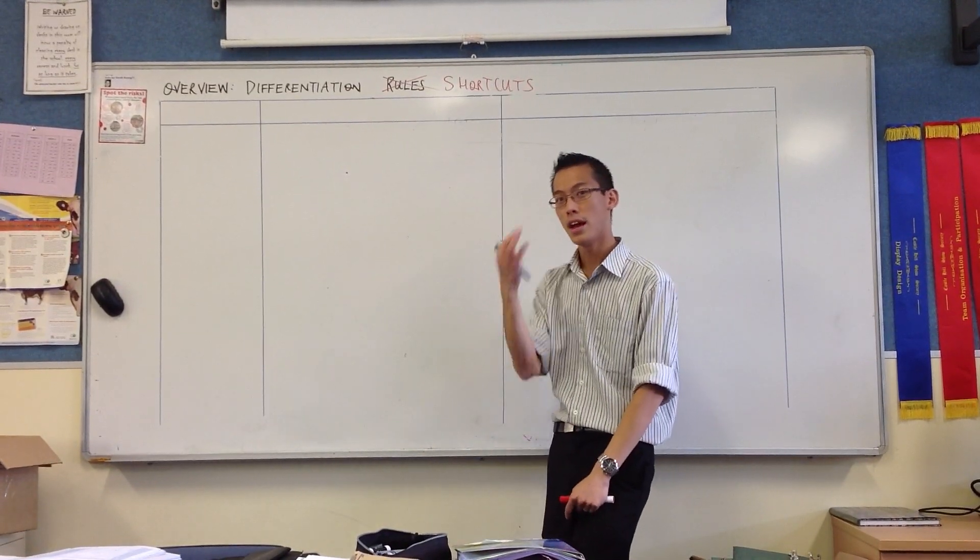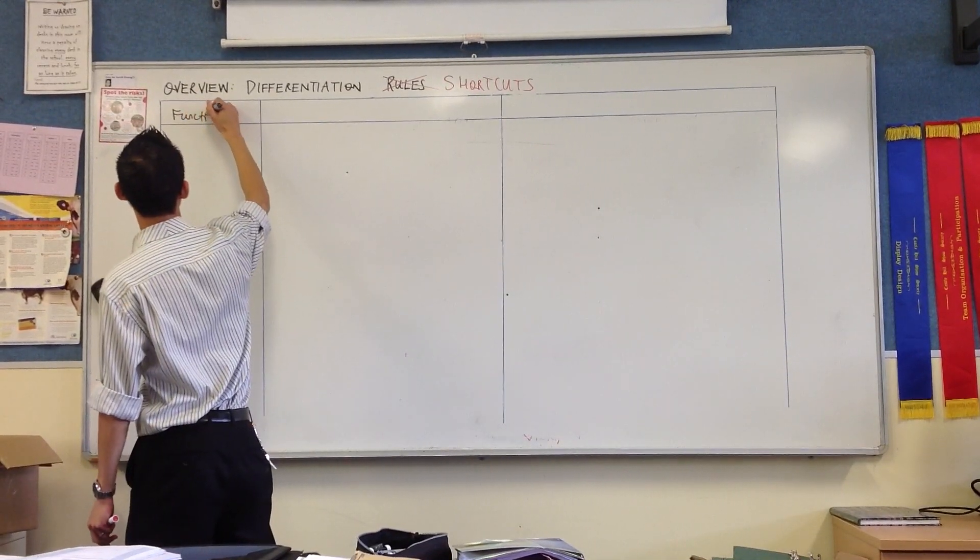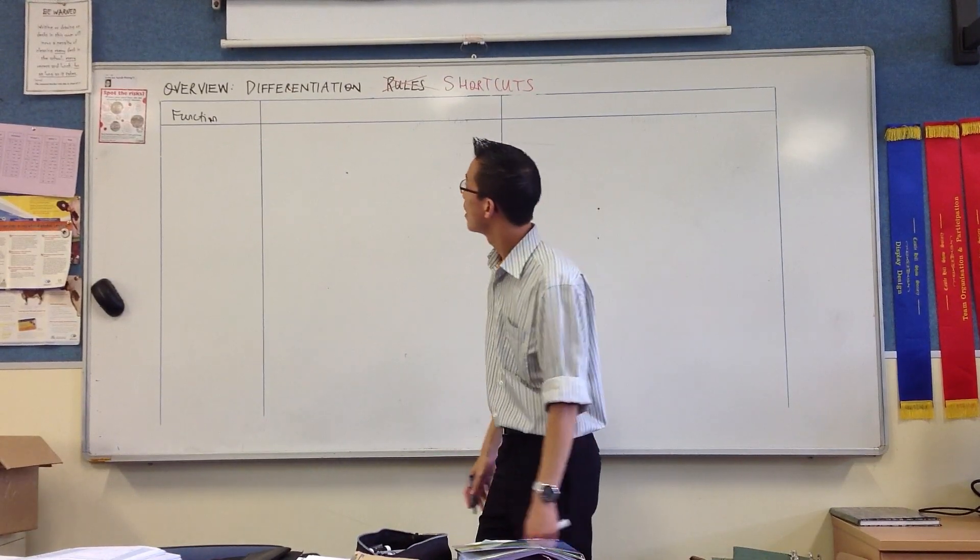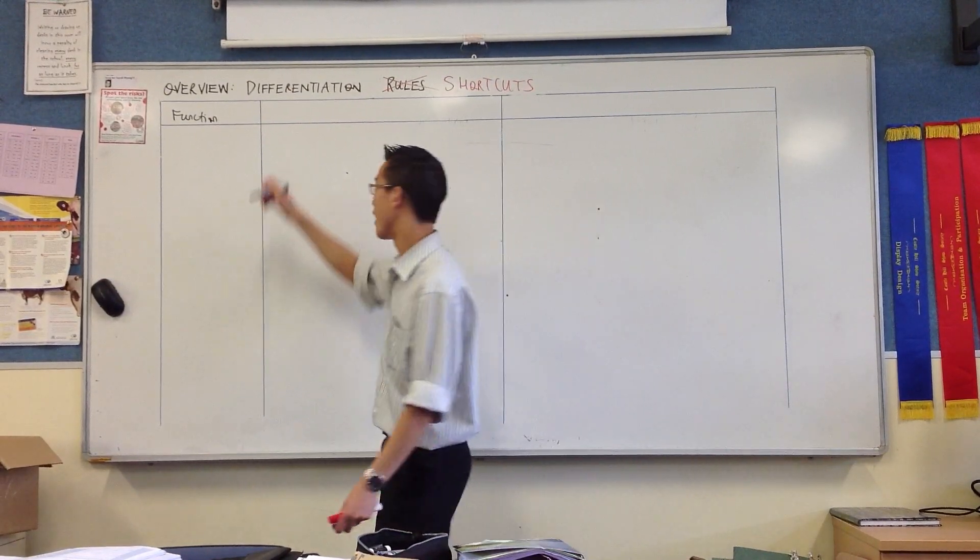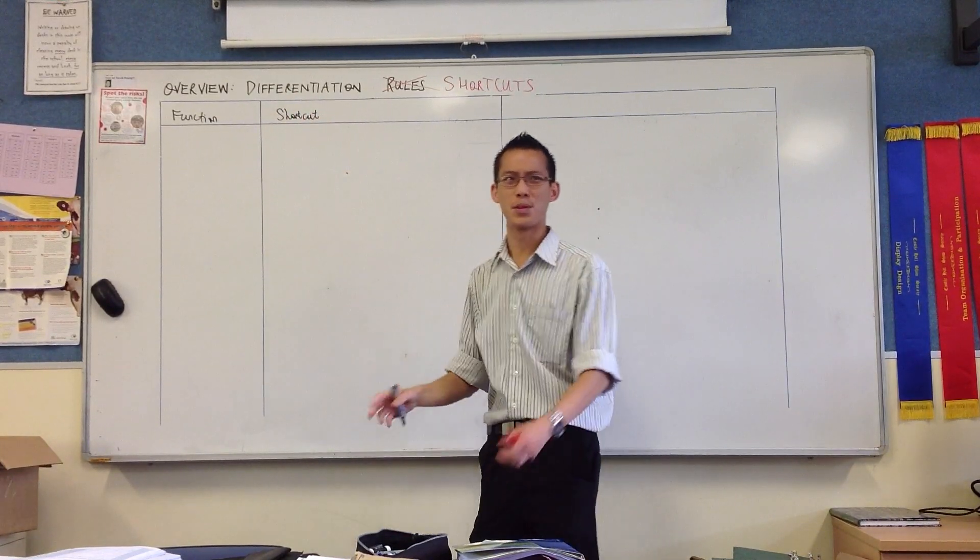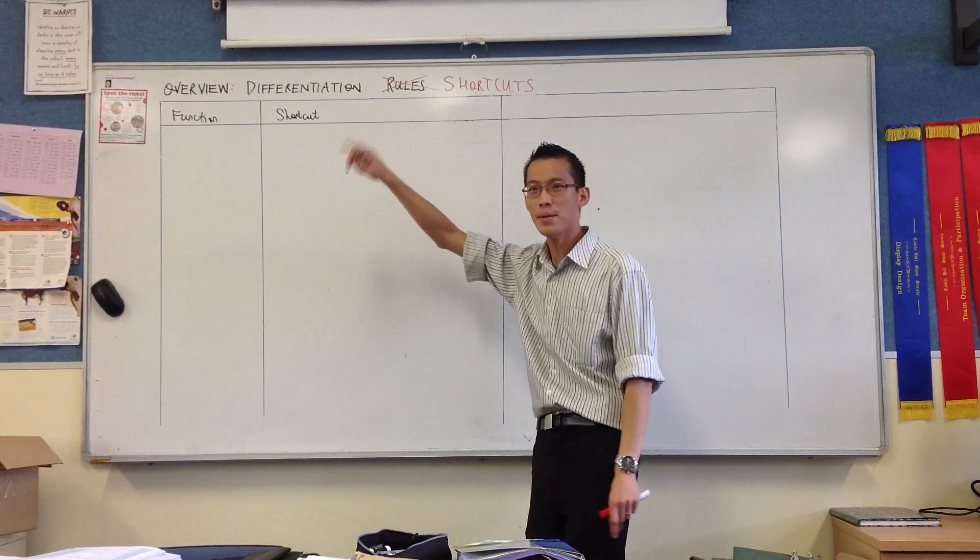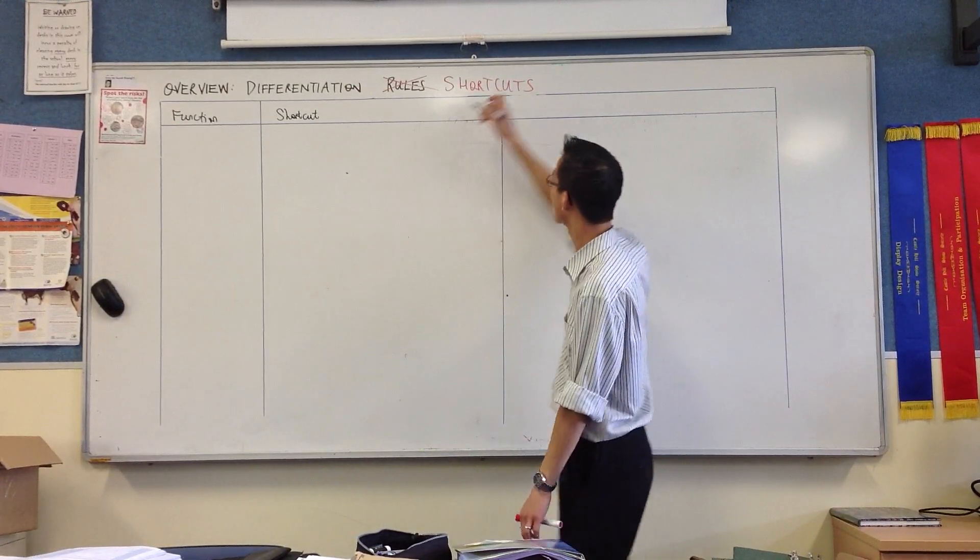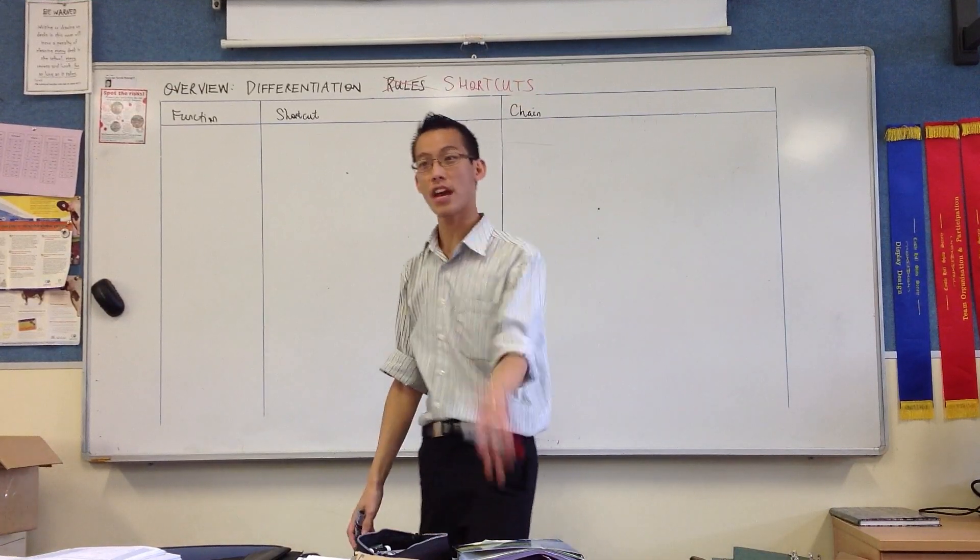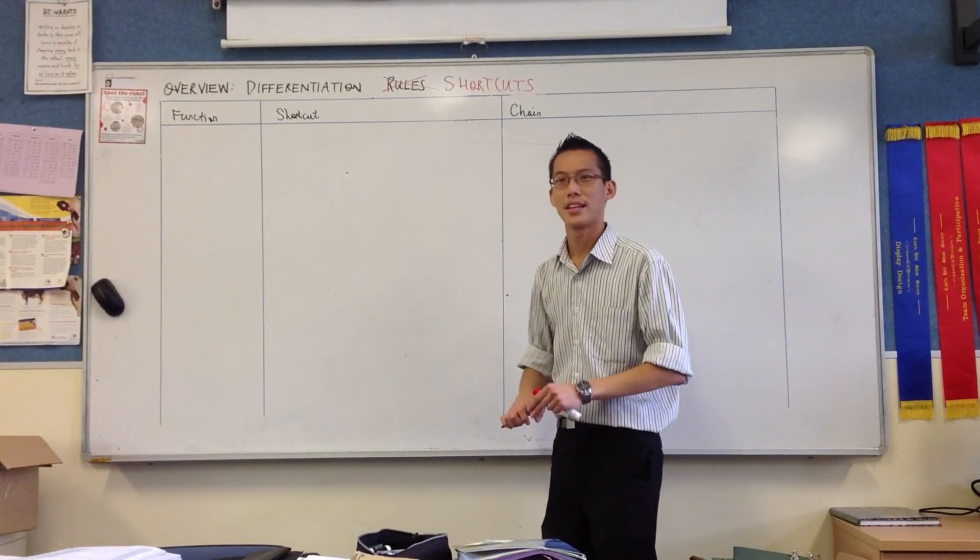This is the table you should have drawn, three columns. The first one will be function, so we'll look at all the different kinds of families of functions. Then we'll look at the shortcut for how to differentiate. Now I hope by now most of this will be starting to soak its way into your head. Then we'll have a look at how the shortcut works.